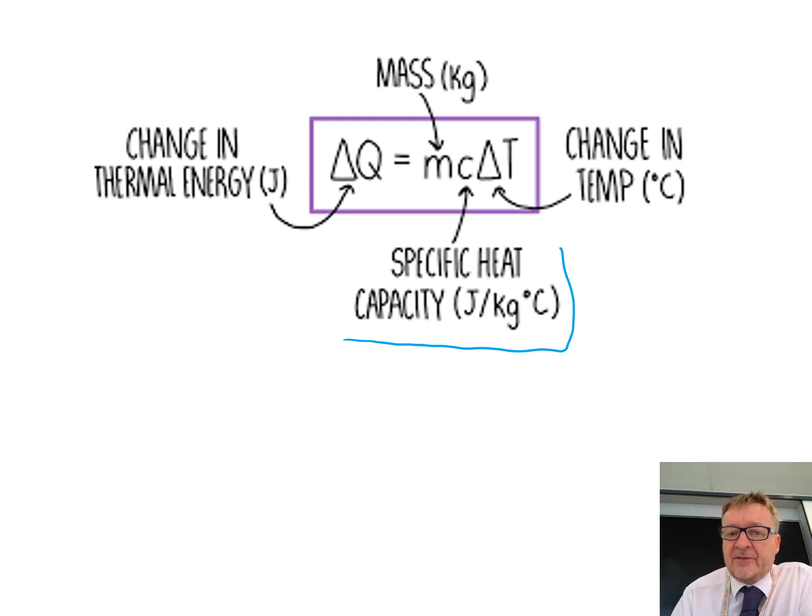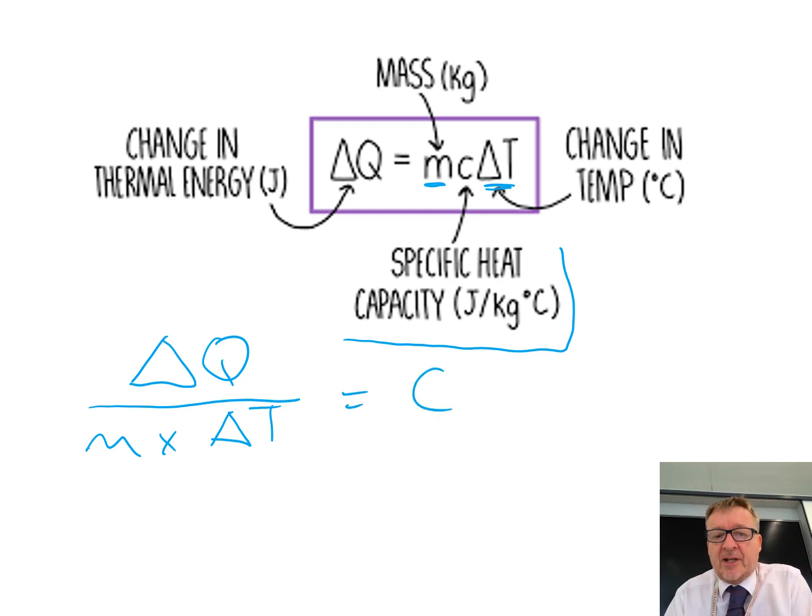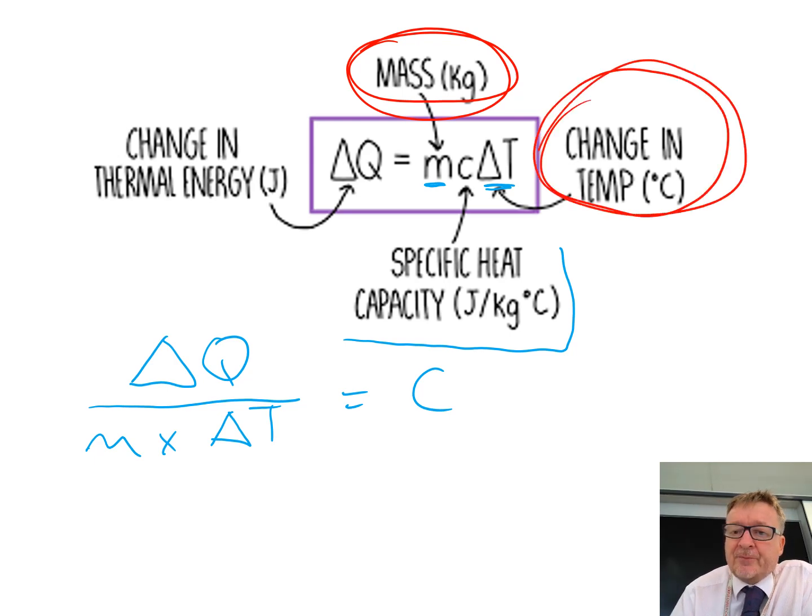So, you need to do a little bit of algebra rearranging it. So, you've got your change in thermal energy. And because you've got your M and your change in temperature on that side, what you've got to do is you've got to divide them. So, it goes underneath. Mass times change in temperature equals C, which is your specific heat capacity. Now, that's fine, because in your experiment, you can calculate the mass dead easy. You put it on a mass balance. You can calculate the change in temperature very easy because it's the temperature at the start to the temperature at the end. That's dead straightforward.